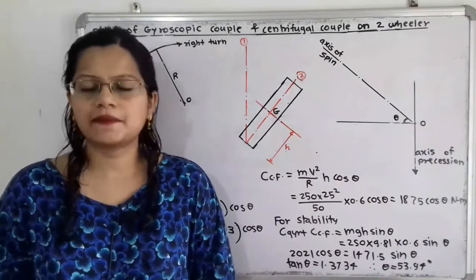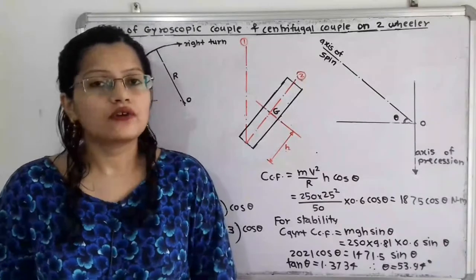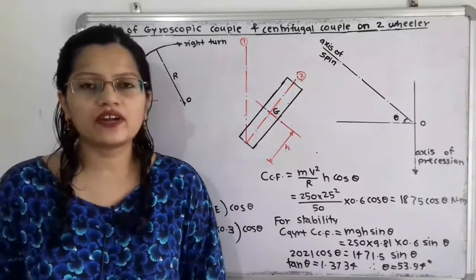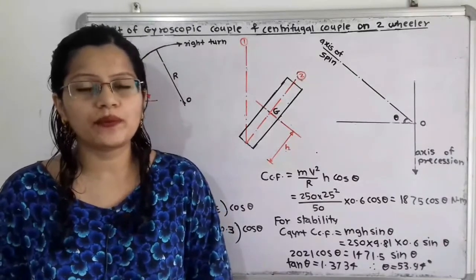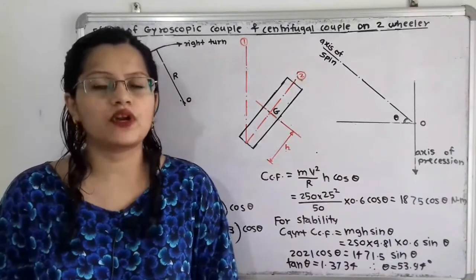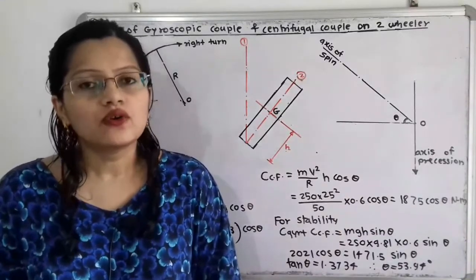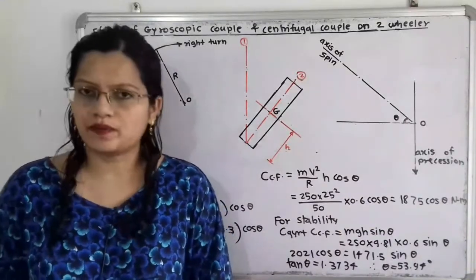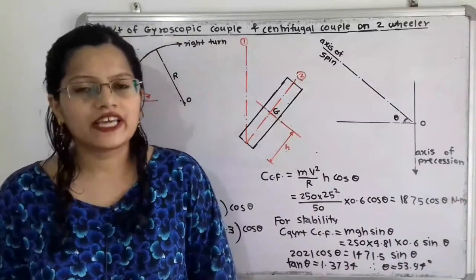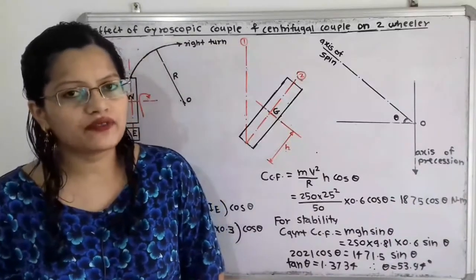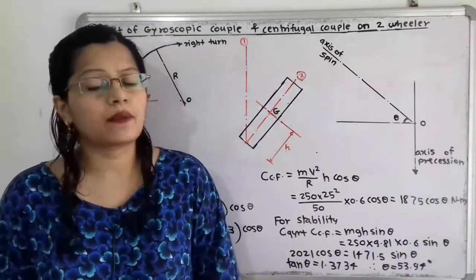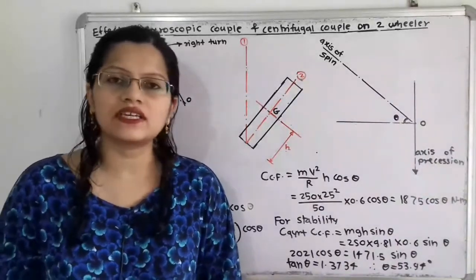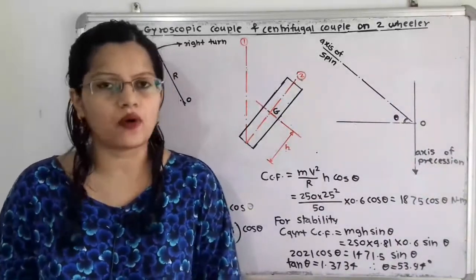Hello friends, this is Priyanka. Today we are going to solve a problem on the effect of gyroscopic couple and centrifugal couple on a two-wheeler when it is moving along a curved path. For the theoretical part and formula, please refer my previous video — the link is given in the description box.